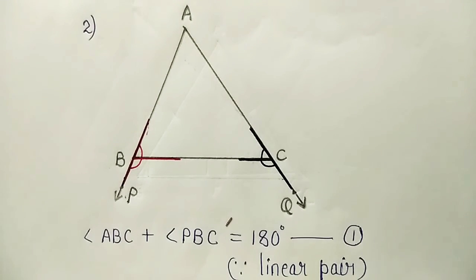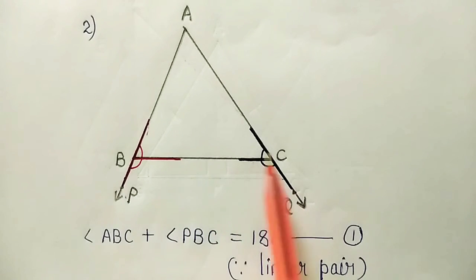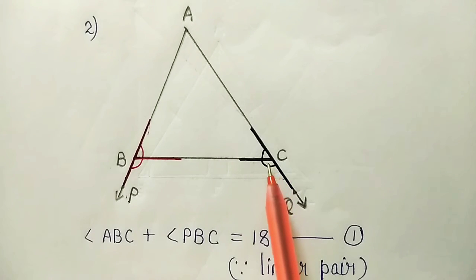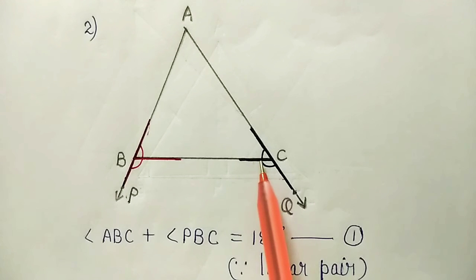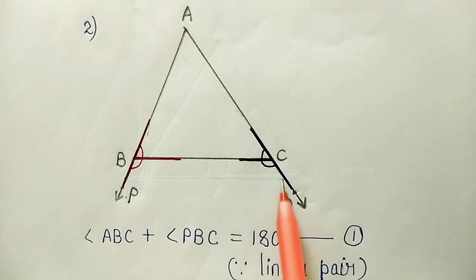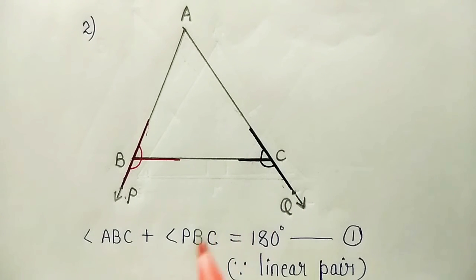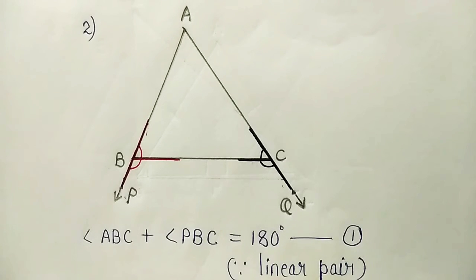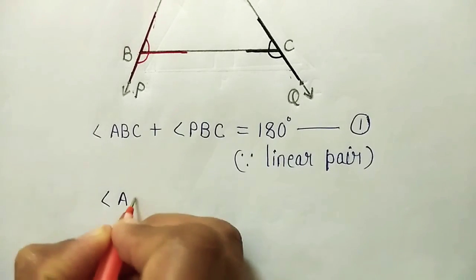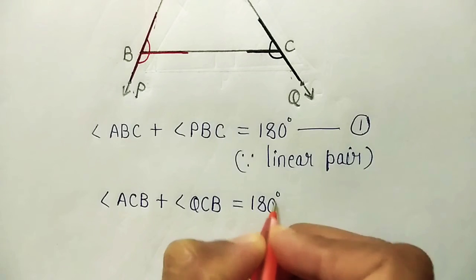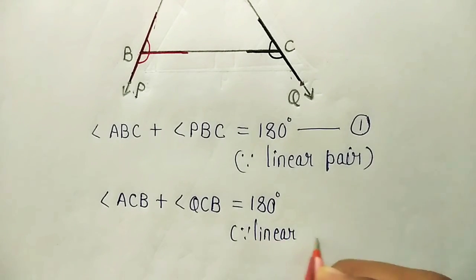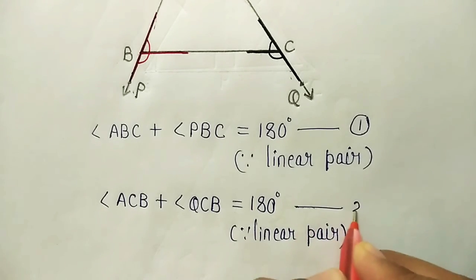Now consider angles ACB and angle QCB. Angle ACB and angle QCB are also angles of a linear pair — they have common arm CB and the non-common arms form a straight line. Therefore, angle ACB plus angle QCB equals 180 degrees. This is equation number 2.